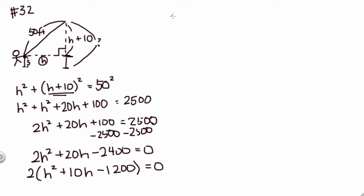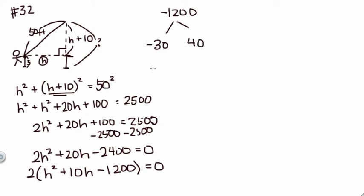Now I've got to factor. So I'm looking at negative 1200—I'm looking at factors of negative 1200 that when I add them together I want 10. The values that I have are 30 and 40, but since I want it to be positive 10, I'm gonna let the 30 be the negative part.